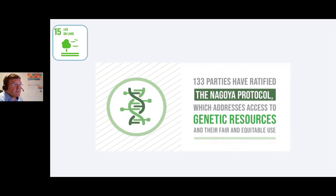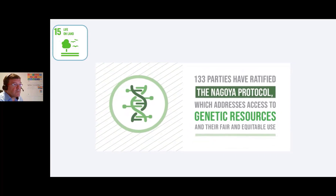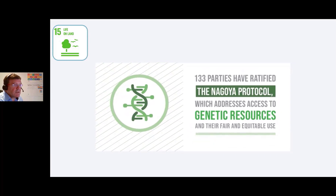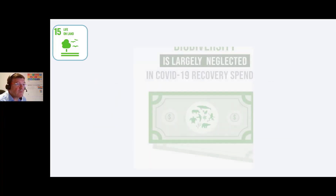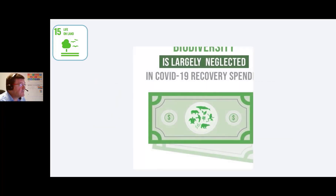133 parties have ratified the Nagoya Protocol, which addresses access to genetic resources and their fair and equitable use. We will look at the Nagoya Protocol and its implications in more detail later on.